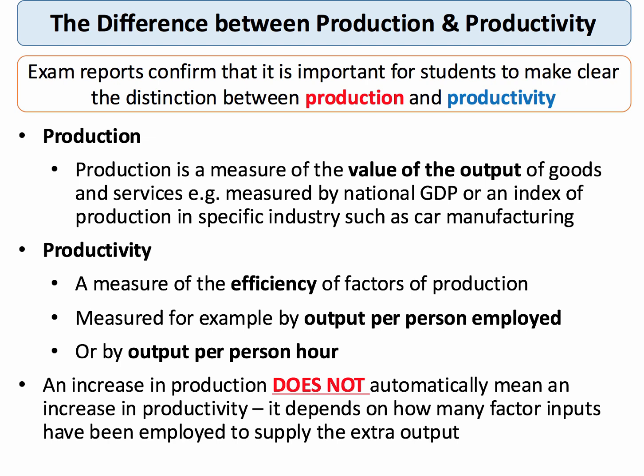Key point: an increase in production — in other words, total output — does not automatically mean there's been an increase in productivity. Of course, it depends on how many factor inputs — land, labour and capital — that we've brought into play to produce the extra output.